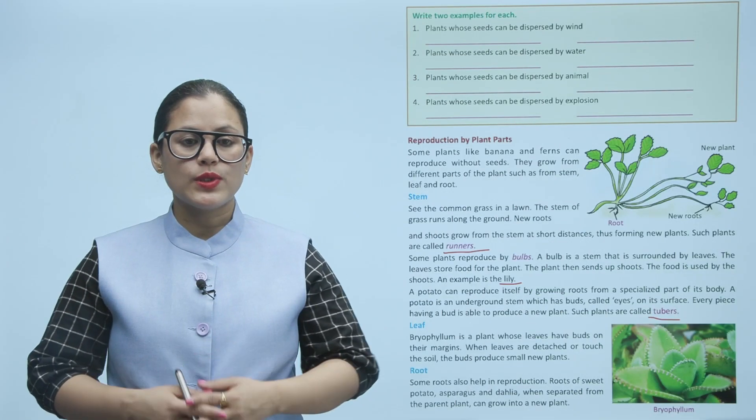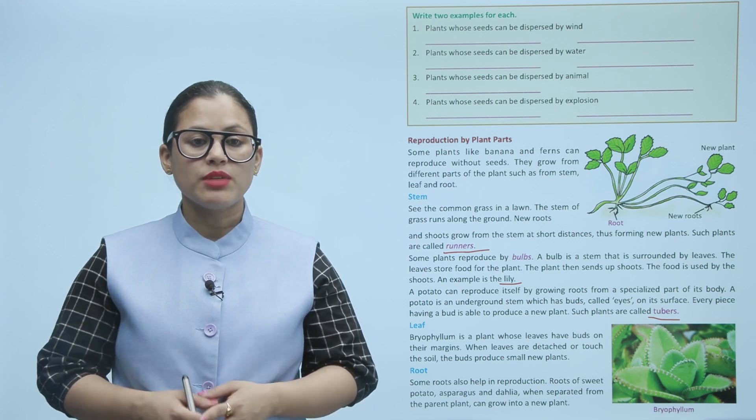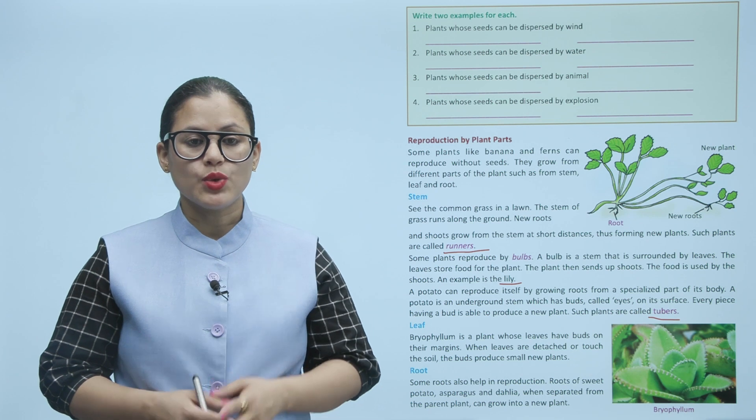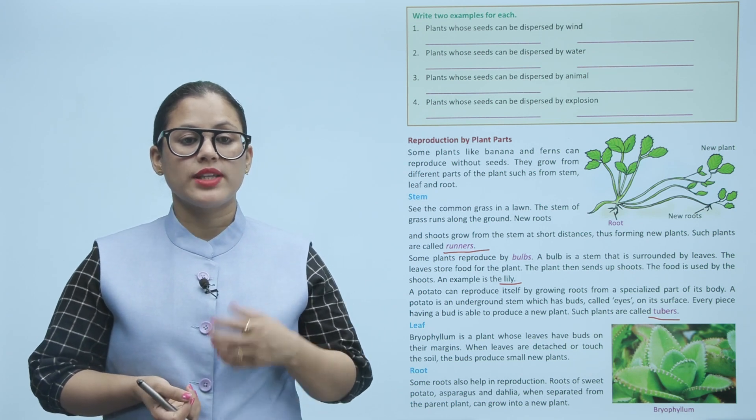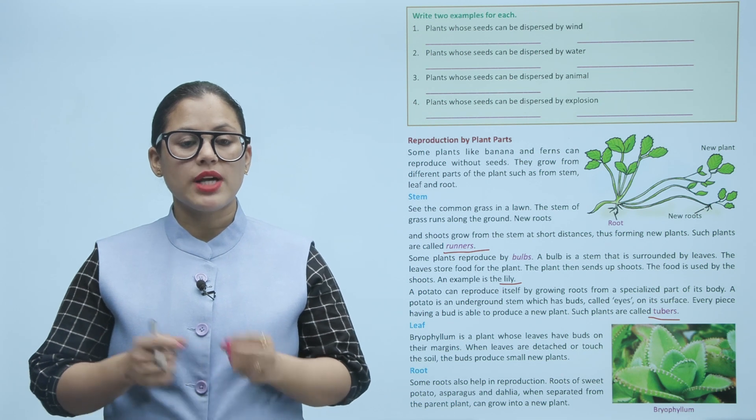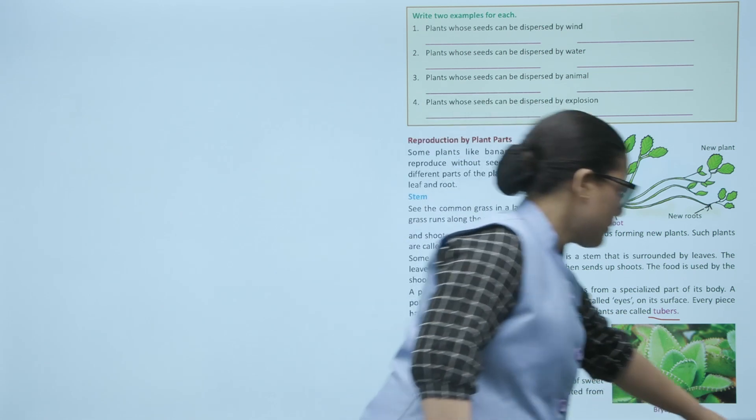Root: Some roots also help in reproduction. Roots of sweet potato, asparagus, and dahlia when separated from the parent plant can grow into a new plant.